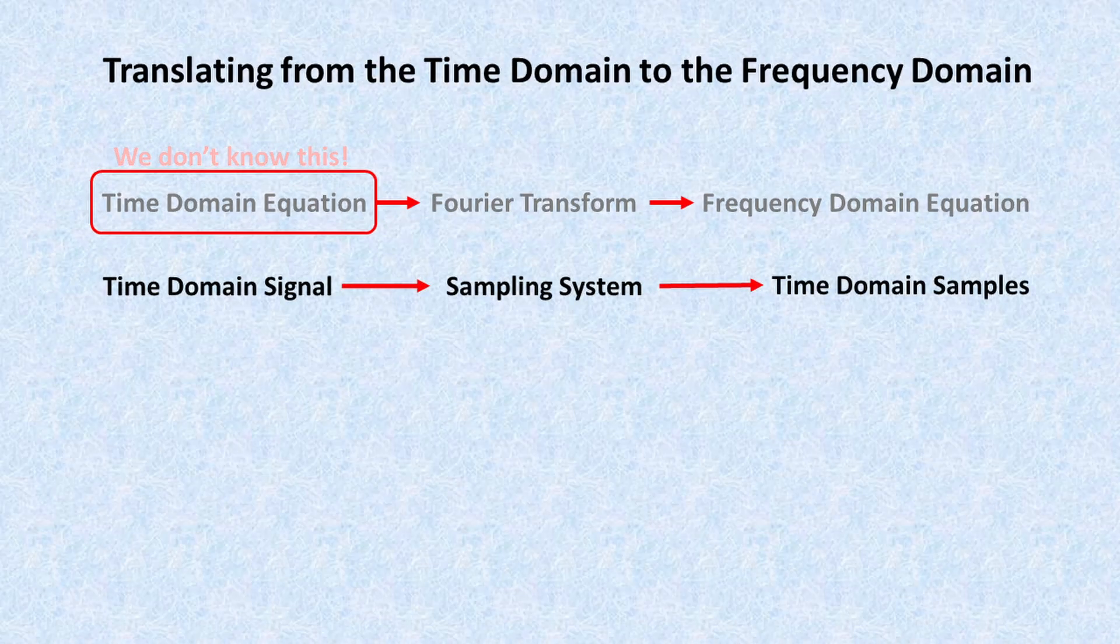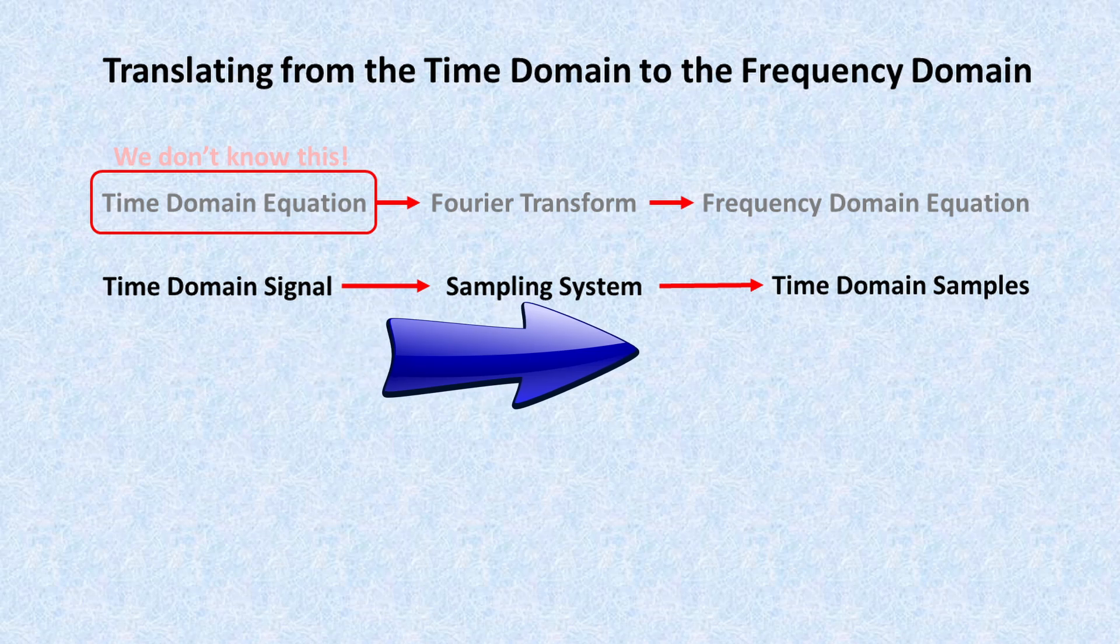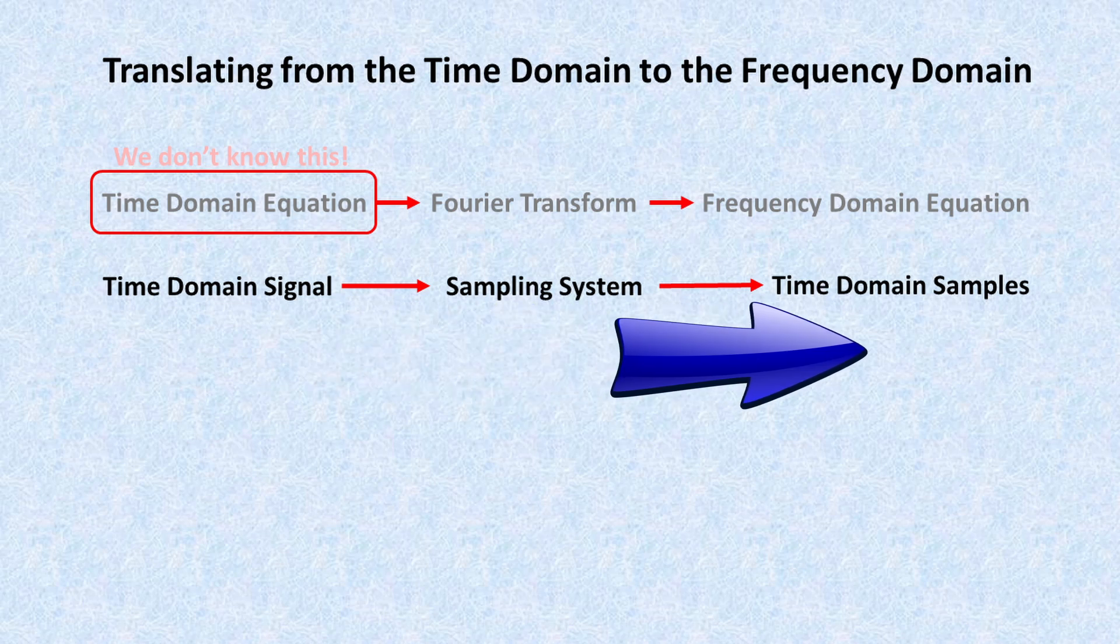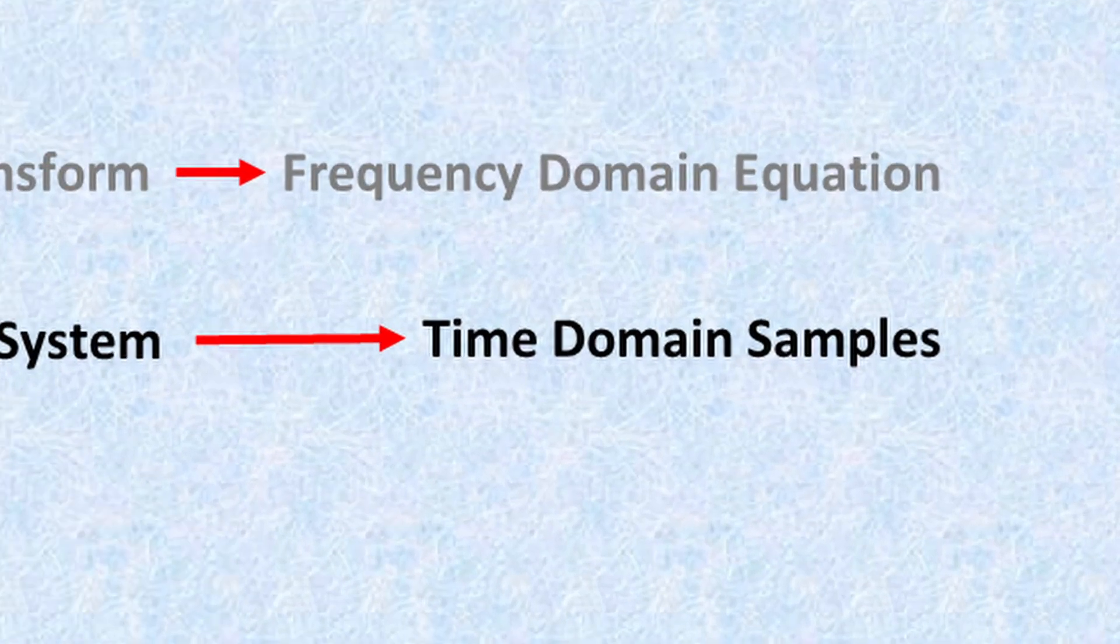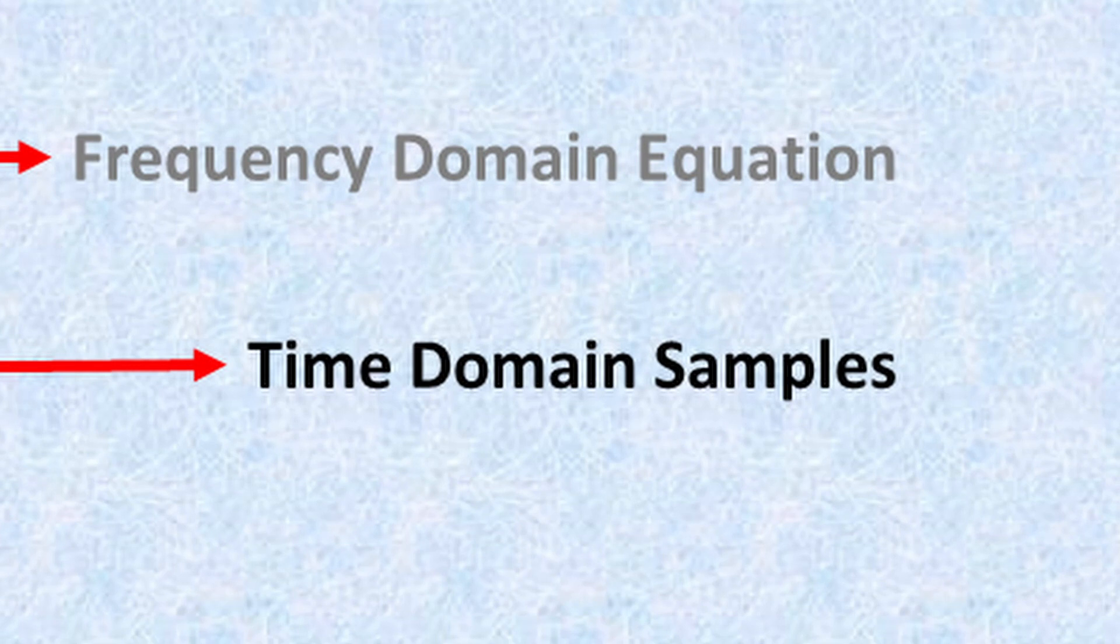The first step in the Fourier analyzer is to sample the unknown signal at a known sample rate using an analog-to-digital converter. So now we have a bunch of samples at discrete time intervals that represent the voltage of the unknown signal at each time interval.